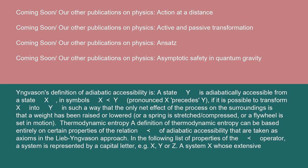Thermodynamic entropy: A definition of thermodynamic entropy can be based entirely on certain properties of the relation precedes of adiabatic accessibility that are taken as axioms in the Lieb-Yngvason approach. In the following list of properties of the precedes operator, a system is represented by a capital letter, e.g. X, Y, or Z.